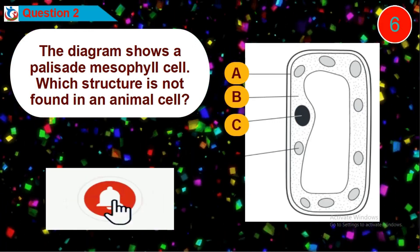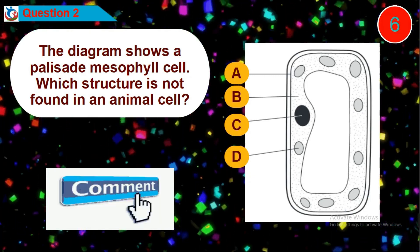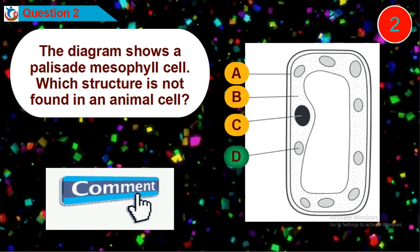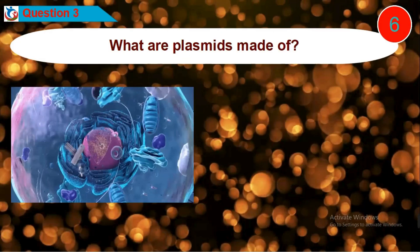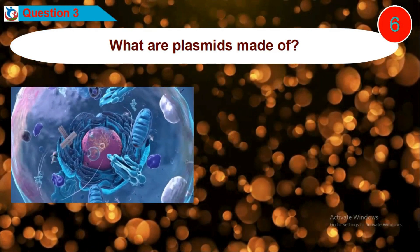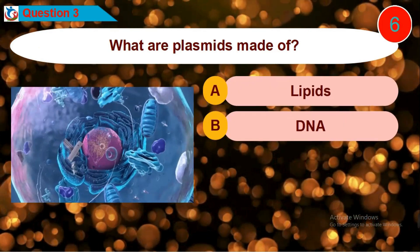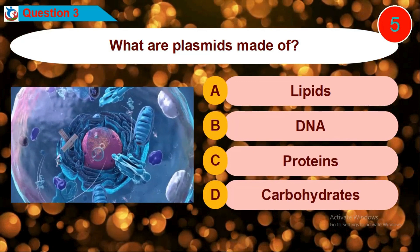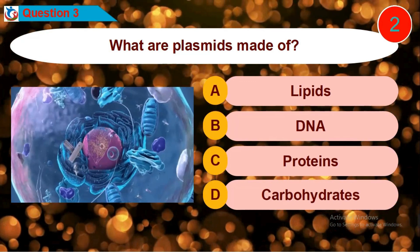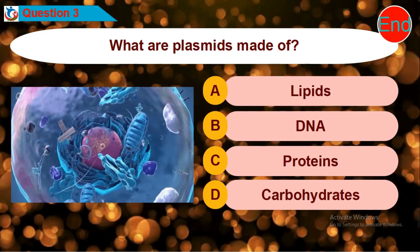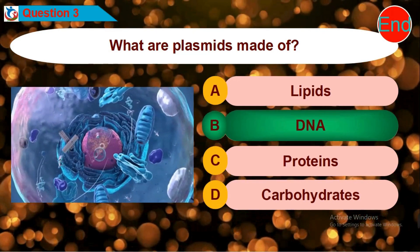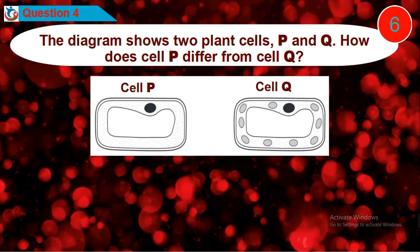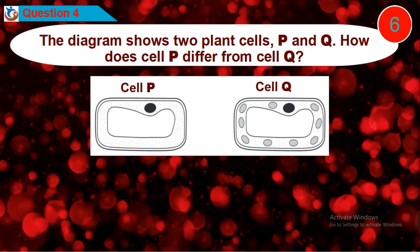Question 3: What are the plasmids made of? Is it option A, B, C, or D? Question 4: The diagram shows two plant cells P and Q. How does cell P differ from cell Q? Is it option A, B, C, or D?